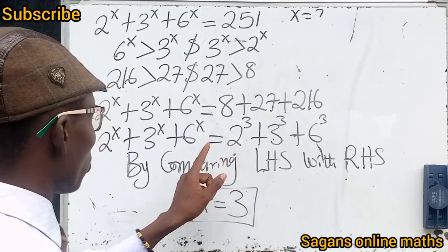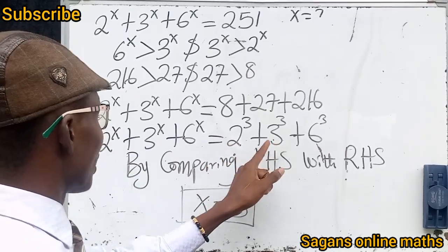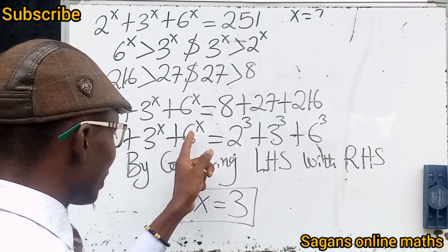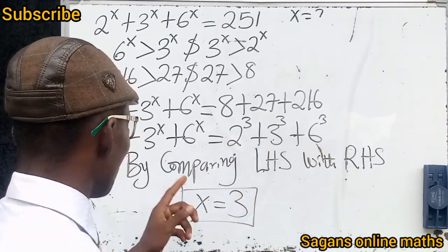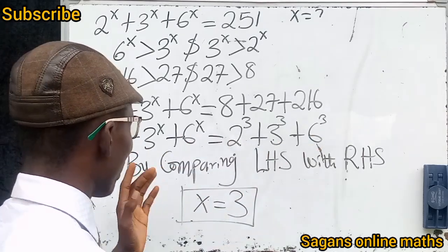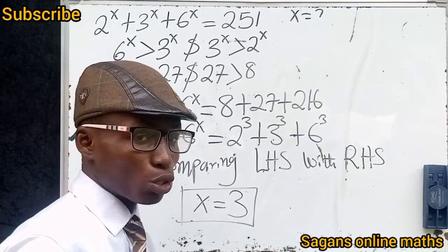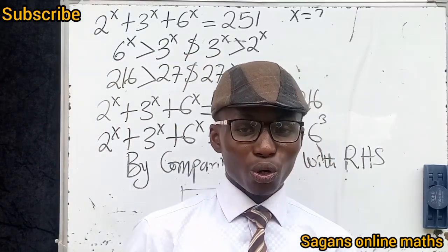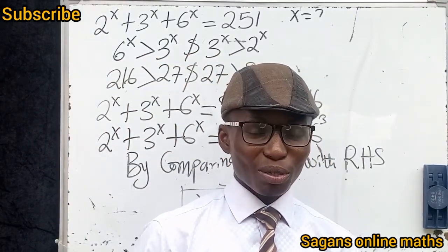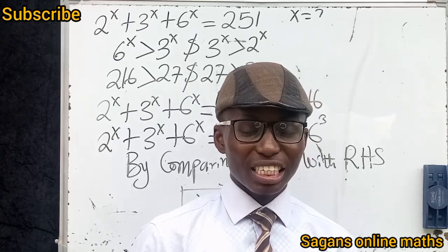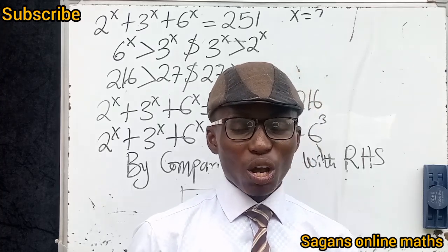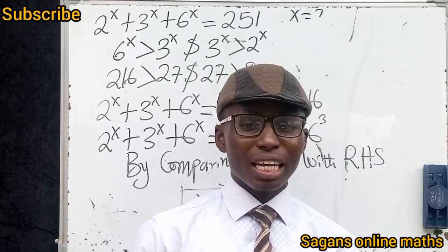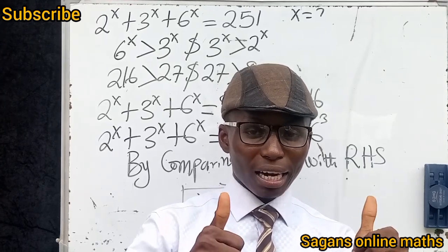...we see that x equals 3. Here we have base 2 on both sides, base 3 on both sides, and base 6 on both sides. The exponents on the left and the exponents on the right are the same. So by comparing the left hand side with the right hand side, we conclude that x equals 3. Thank you so much for watching — please like, comment, and share with loved ones. God bless you, bye!